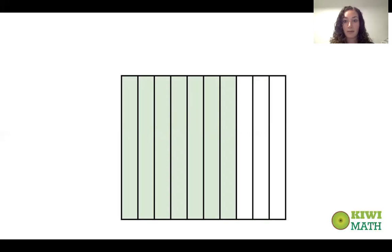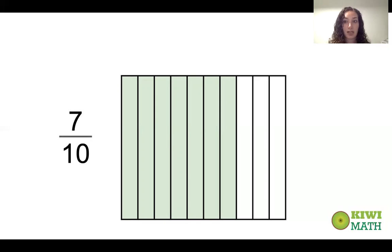Here's a model — I want you to think about what fraction represents this model and how we would write it as a decimal. Pause the video, write out your fraction and decimal, and then come back to see the answer. As a fraction, we would write this as seven tenths, because there are seven pieces shaded in out of ten. And because we're talking about tenths, this goes in the tenths place, so we write it as 0.7.